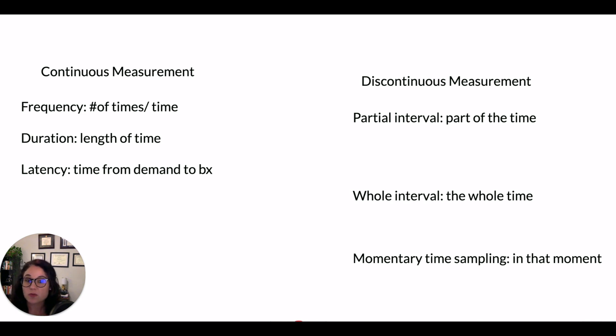Discontinuous measurement procedures are broken down into intervals so that we don't have to continuously monitor the behavior but whether or not it happens or if it does happen the whole time. Sometimes in that moment in time we may look up just to see if it's happening. So those are the main key differences between the two.